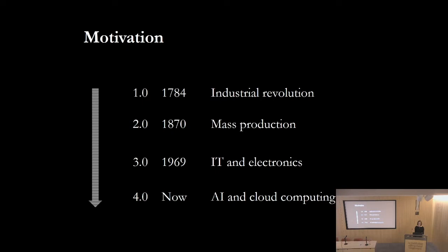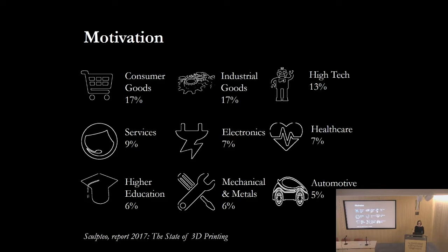Throughout history we've had various industrial revolutions. The first was the age of mechanisation, then mass production — creating the same object quickly and cheaply. More recently, electronics and IT have sped up our processes. We no longer do drawings by hand; we do 3D modelling, and we're moving into the age where artificial intelligence and cloud computing will completely change what we do, including smart construction and integration of design with the construction process.